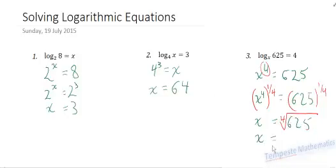Which, if you try that out, that is 5. Because 5 to the power of 4 is 625.